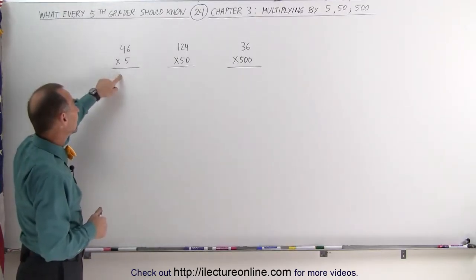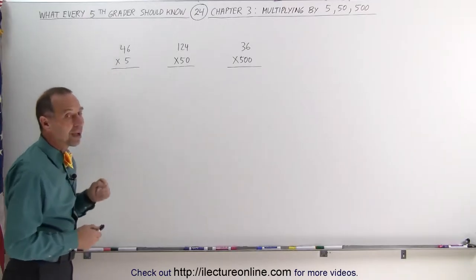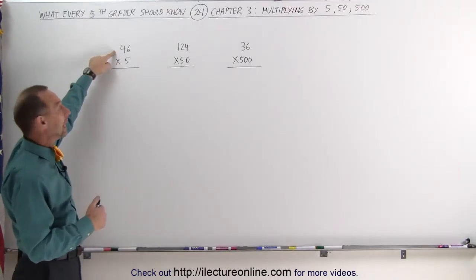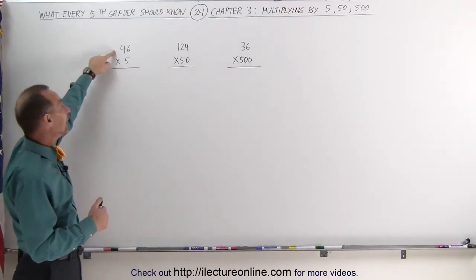The example we can show you here when we multiply times 5, what you can do is first divide the number by 2 and then multiply times 10. Now multiplying times 10 is like adding a zero to the number.